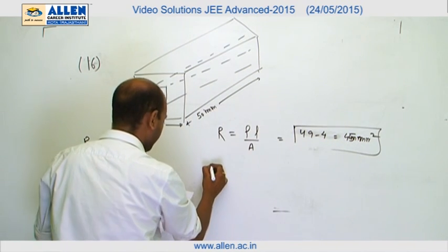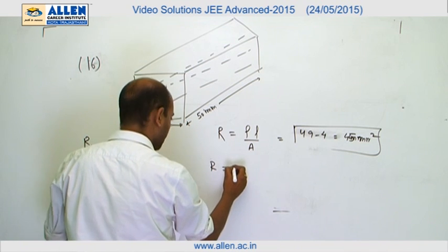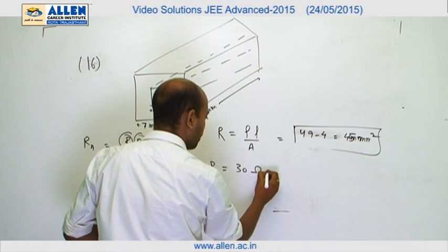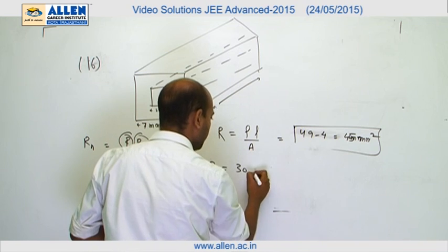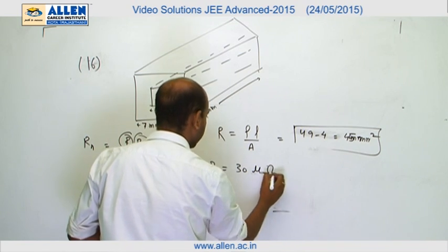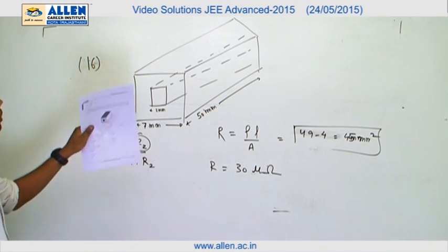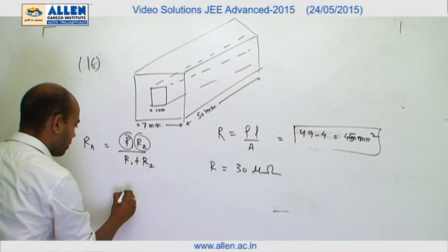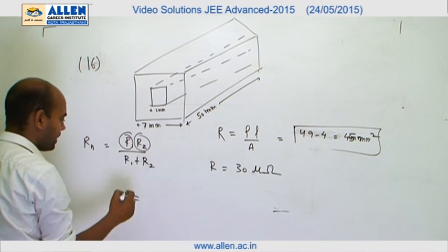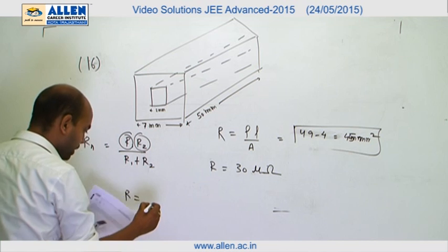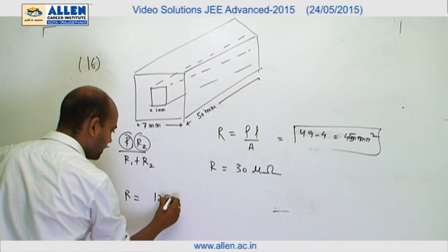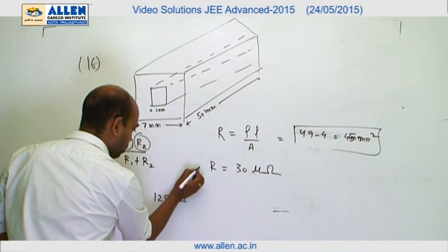By putting the value, R comes out to 30 micro ohm. Similarly, if we consider the ferrous, the resistance comes out to 1250 micro ohm because its area is 4 mm squared.